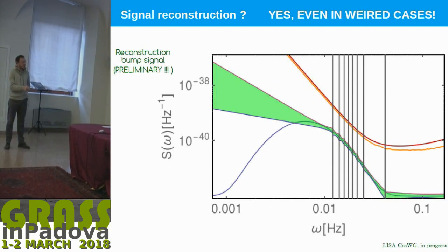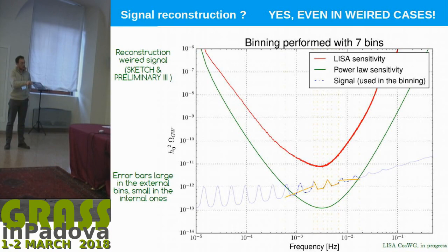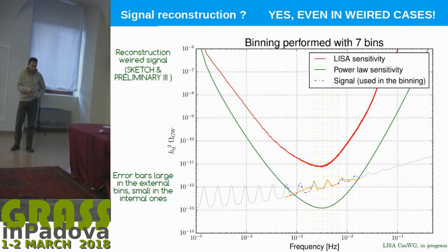Here is a preliminary result: imagine you have this input signal, and this yellow band is how you reconstruct the signal in LISA. And something similar holds even if you have a very unusual signal that is not a broken power law at all — the blue is the injected signal and the green is how you reconstruct it. It is better than what I expected.